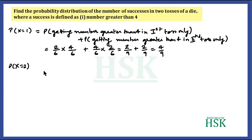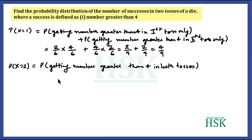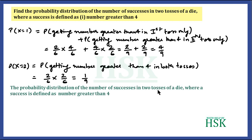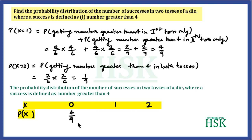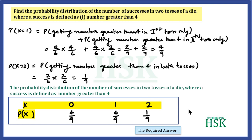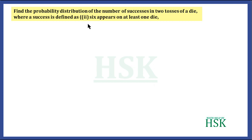P(X=2), the probability that in both throws we get a number greater than 4, equals 2/6 × 2/6, which simplifies to 1/9. So the probability distribution of the number of successes in two tosses of a die, where success is a number greater than 4, is: P(X=0) = 4/9, P(X=1) = 4/9, P(X=2) = 1/9. This is the required answer for Part 1.